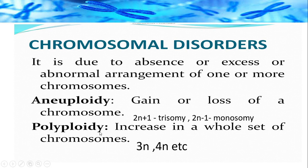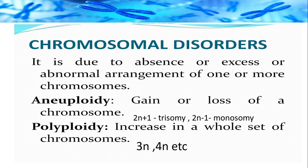Polyploidy is the case where 3n means 23+23+23, and 4n means 46+46 — the total sets are increasing. Aneuploidy, on the other hand, means not the total set, but only one chromosome is added or deleted. How does a chromosome come to be added or deleted? The reason is non-disjunction of chromosomes.